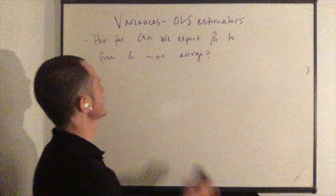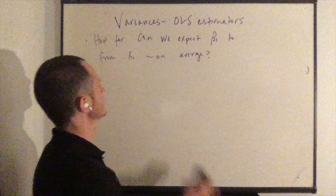Let's prove that the variance of β̂₁ equals σ² over SST_X. The proof starts with our expression of β̂₁: β̂₁ equals β₁ plus 1 over SST_X times the sum from i equals 1 to n of dᵢuᵢ. This is the result of β₁ being a constant and the xᵢ being assumed non-random — fixed in repeated samples.